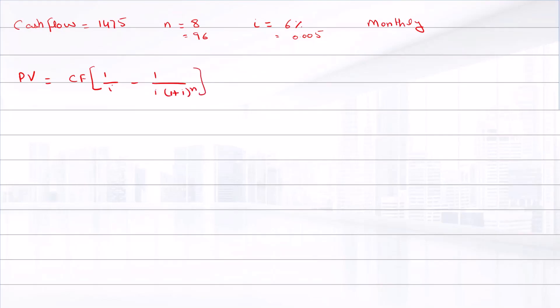The present value equals 1,475 times [1 divided by 0.005 minus 1 over 0.005 times 1.005 raised to power 96], which equals $112,240.45.